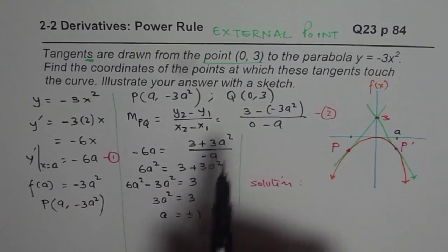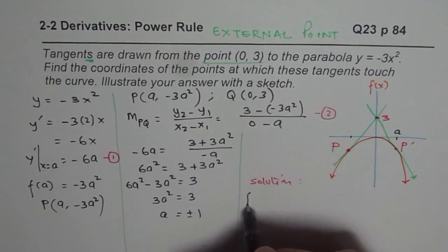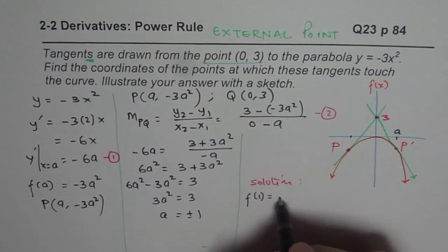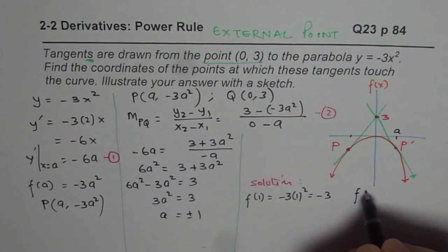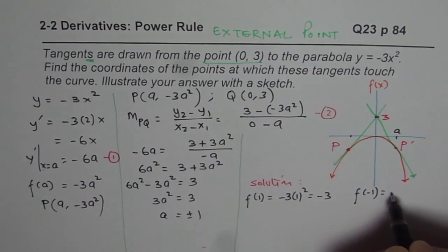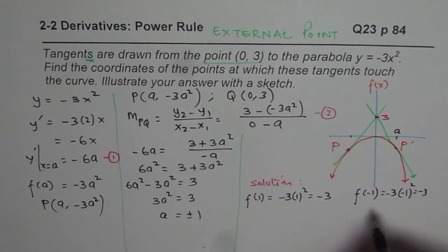If A is 1, then what is the value? So f(1) = -3(1)² = -3. And f(-1) is also same, -3(-1)² = -3. And therefore,